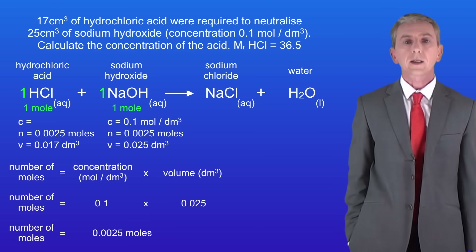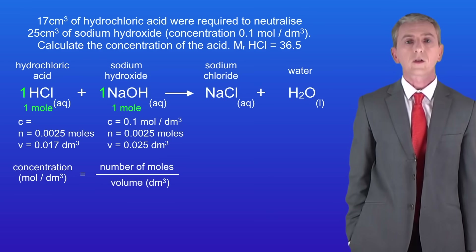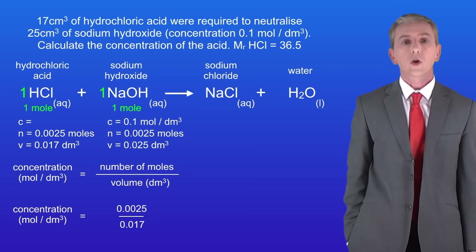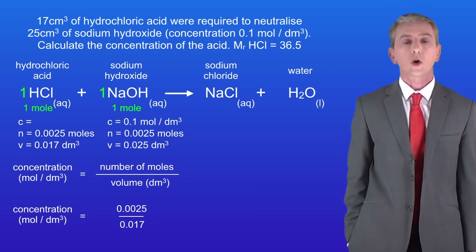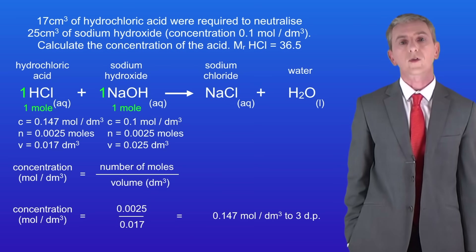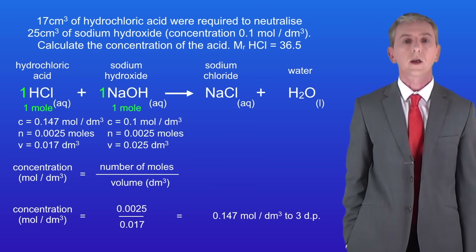Now we can calculate the concentration of the hydrochloric acid by dividing the number of moles by the volume. Dividing 0.0025 by 0.017 gives us a concentration of 0.147 moles per decimetre cubed to three decimal places.